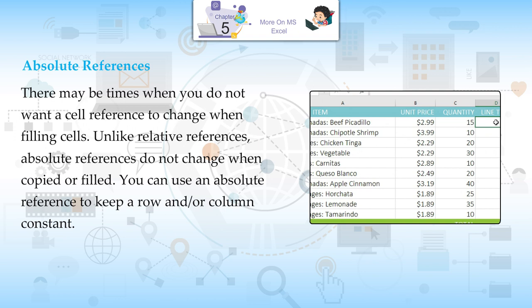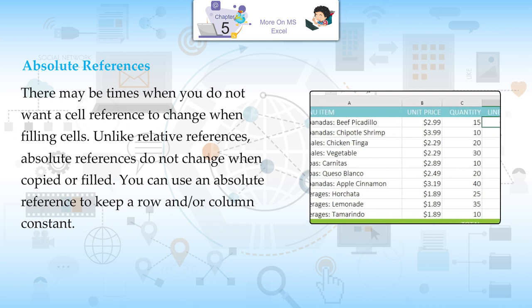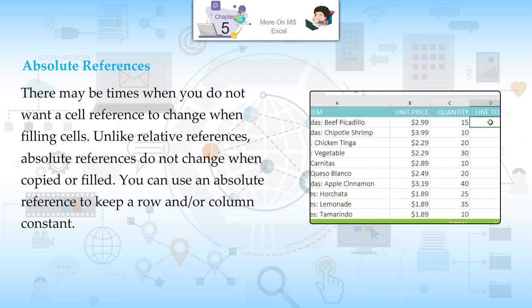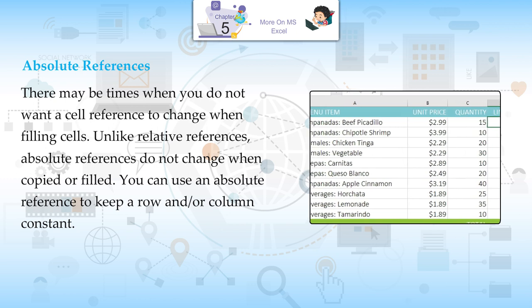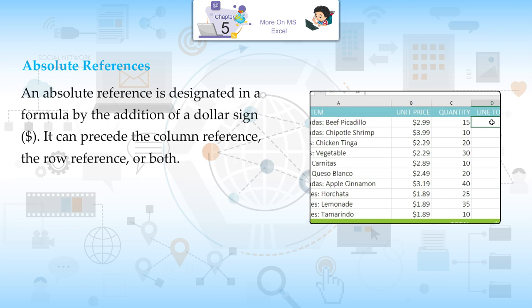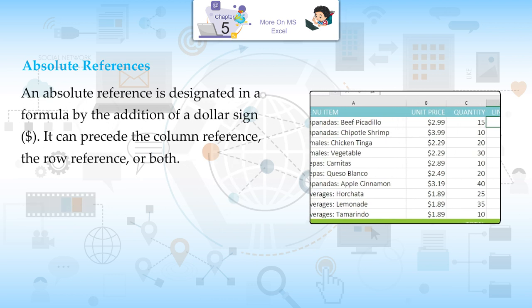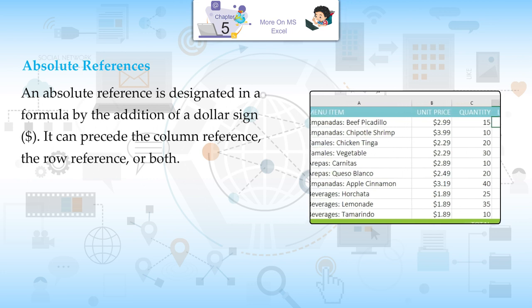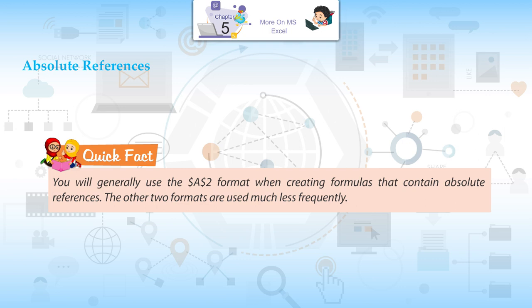Absolute references: There may be times when you do not want a cell reference to change when filling cells. Unlike relative references, absolute references do not change when copied or filled. You can use an absolute reference to keep a row and/or column constant. An absolute reference is designated in a formula by the addition of a dollar sign, which can precede the column reference, the row reference, or both. You will generally use the $A$2 format when creating formulas that contain absolute references.